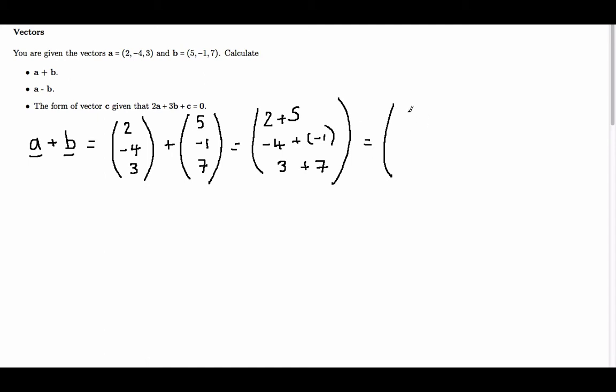Now 2 plus 5 is 7. Minus 4 plus minus 1 is minus 5, and 3 plus 7 is 10. Therefore, a plus b is 7, minus 5, 10.